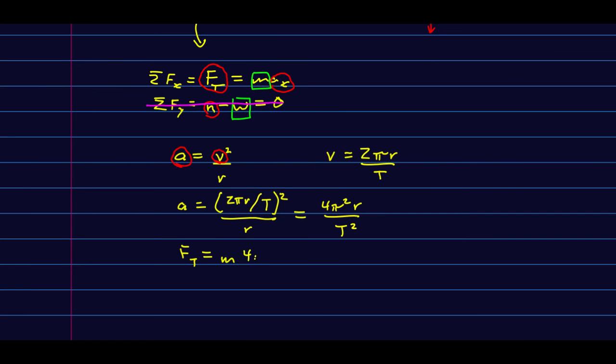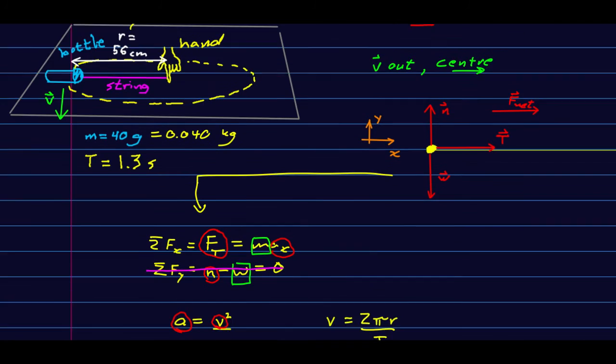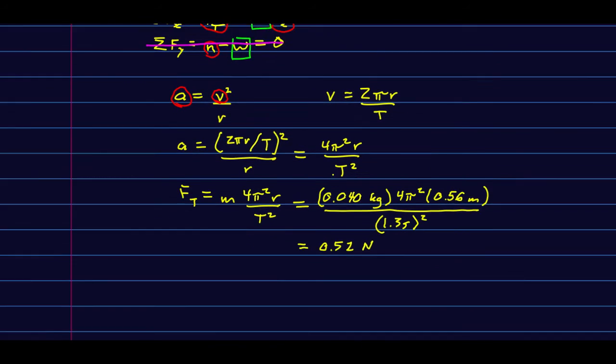m times 4 pi squared r over t squared. And it's time to plug in numbers. So before plugging in, note that we always want to work in mks units. So this radius is 0.56 meters. If we don't work in mks units, our units do very funny things to us. Our mass is 0.04 kilograms. This is already in seconds, so we're good. And if you don't do that, then you're going to get an answer that's off. We'll see why.